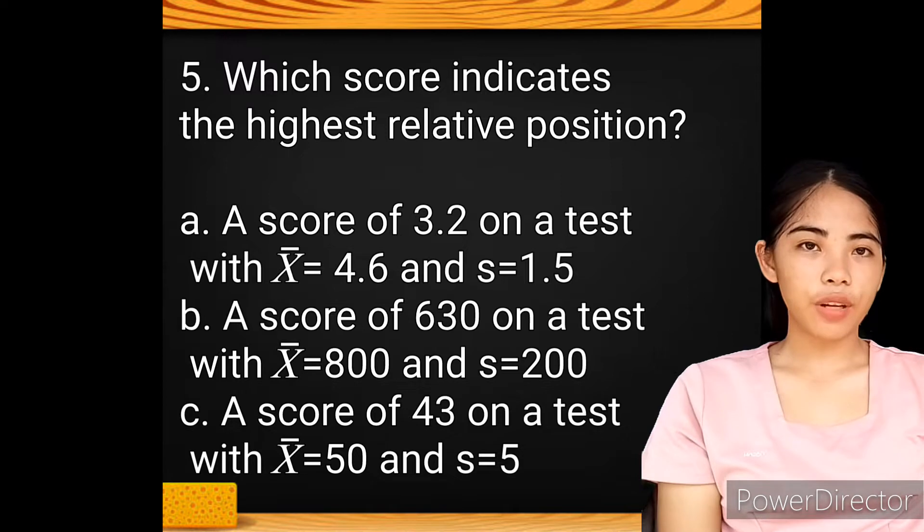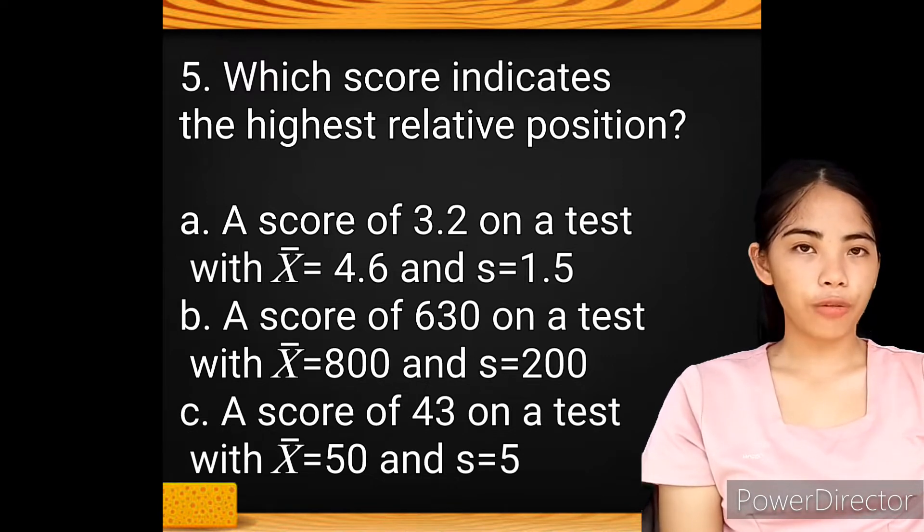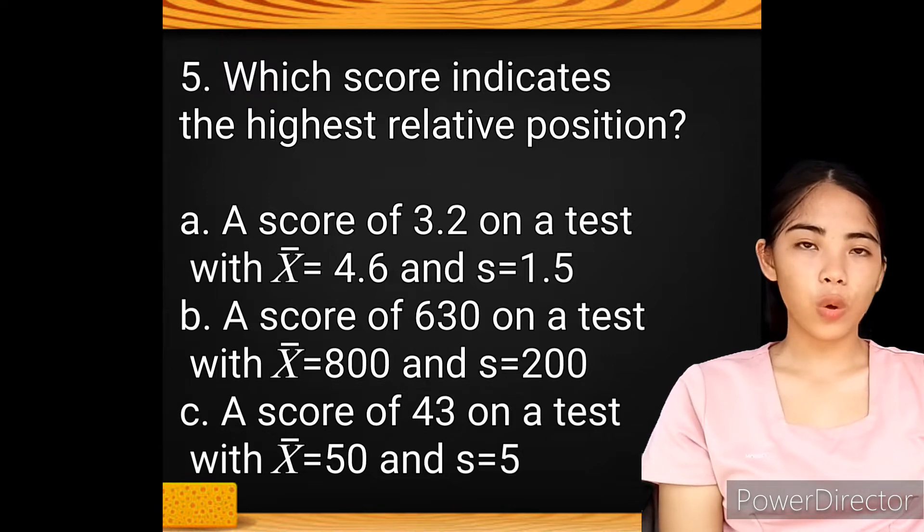The issue with number 5 concerns which scores indicate the highest relative position. We must first solve the z-score or the standard score for a, b, and c in order to determine which score indicates the highest relative position. Let's start with letter A.